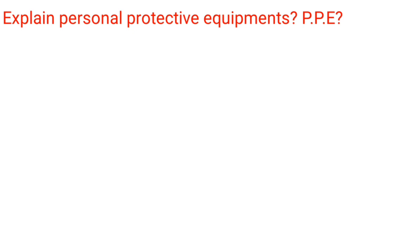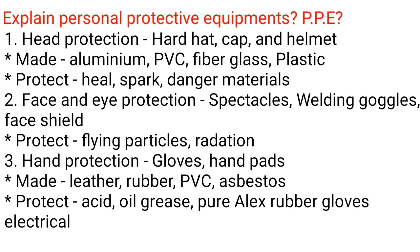Explain personal protective equipment (PPE): 1. Head protection: hard hat, cap, and helmet. Made of aluminium, PVC, fiberglass, or plastic. Protects against heat, sparks, and falling materials. 2. Face and eye protection: spectacles, welding goggles, and face shield. Protects against flying particles and radiation.